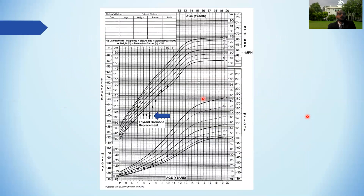Renal manifestations include not only non-pitting edema but also hyponatremia and sometimes increased creatinine. Looking at the growth chart: the child grows normally in height, then there is a plateau where hypothyroidism is undetected for a period. Once detected and thyroxine is started, after a few years of flat growth the height starts increasing again with thyroxine therapy.